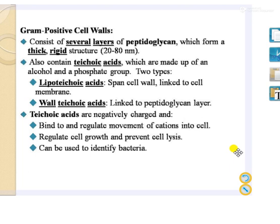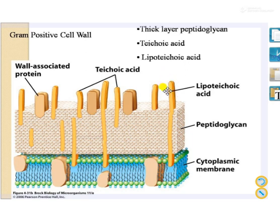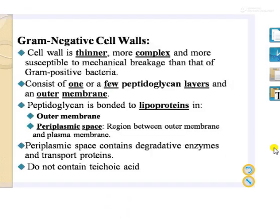Lipoteichoic acids span the cell walls and link to the cell membrane — they are present deeper inside the cell. Wall teichoic acids are present in the upper direction, linked to the peptidoglycan layer. In this figure, you can see the lipoteichoic acids deeper inside the cell and the wall teichoic acids just inside the peptidoglycan. The gram-negative cell wall is thinner, more complex, and more susceptible to mechanical breakage. It does not contain teichoic acid.